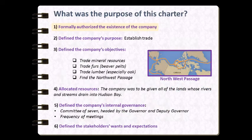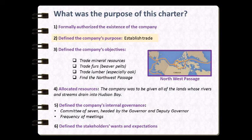Way back on May 2nd, 1670, Prince Rupert signed a charter that called into existence the Hudson's Bay Company and gave the company the rights to most of the lands that we now know as Canada. For several generations, Canada was simply referred to as Rupert's Land. By signing the charter, Prince Rupert authorized the existence of the company, much as a project charter authorizes the existence of a project. The charter also defined the purpose for the company, and that was to establish trade between the New World and Europe. The charter also defined the company's objectives: to find and trade minerals, furs, and lumber with Europe. They were also supposed to find the Northwest Passage. At the time, people had hoped that there was a navigatable link between the Atlantic and the Pacific over the top of Canada. While the company was unable to find the Northwest Passage, they were extremely successful in establishing trade with Europe.